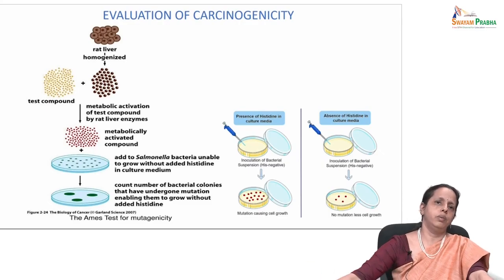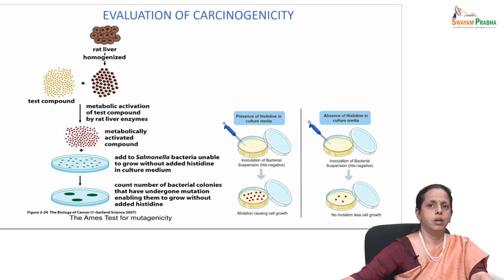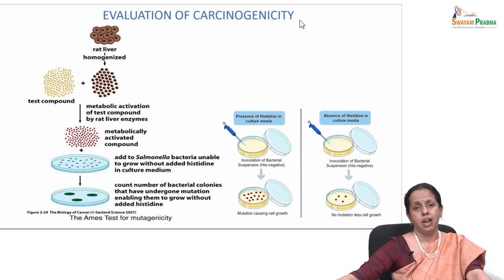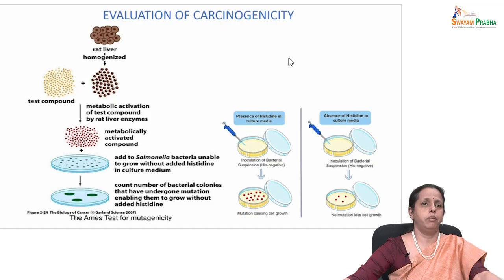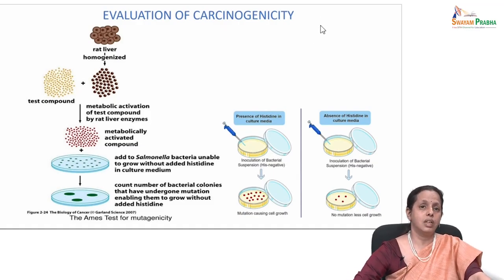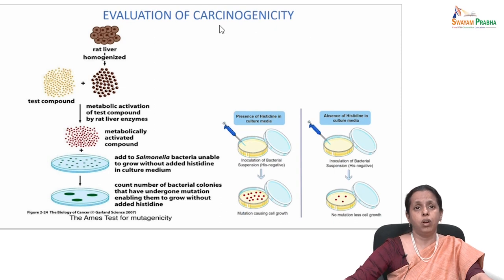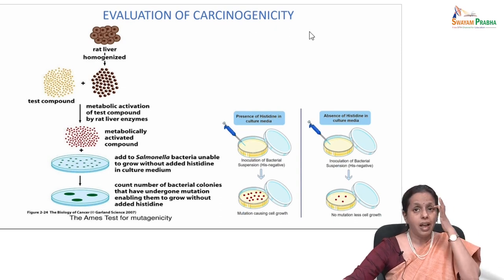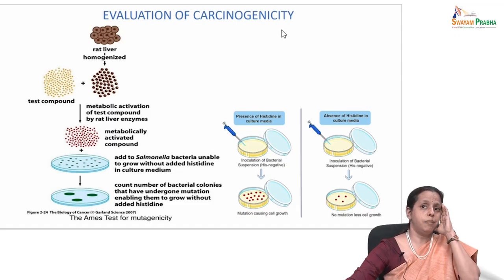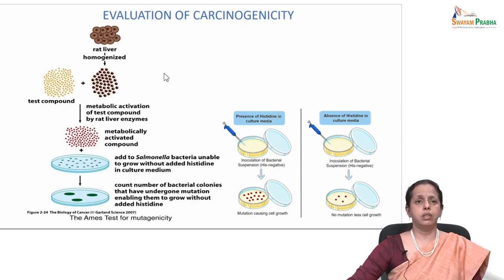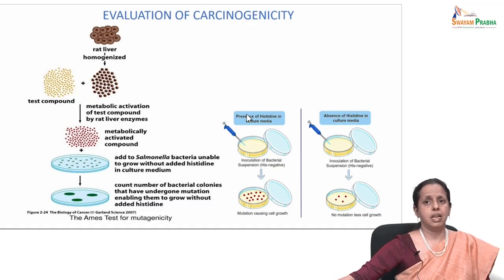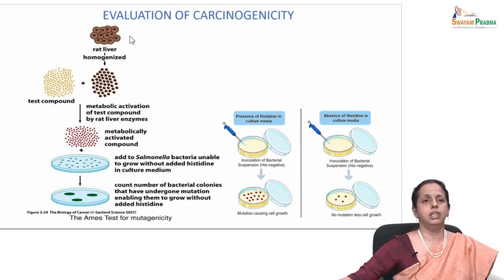One very important assay we will talk about now is the Ames assay, first used for evaluation of carcinogenicity. For example, when you come up with new chemical compounds — say an antibacterial or antibiotic — you have to evaluate whether it causes harm to normal cells or has the potential to cause cancer; the carcinogenicity capacity has to be assessed. The Ames test is named after its developer Bruce Ames at the University of California Berkeley. It uses bacteria as a sensitive biological indicator of whether a substance can cause a change in DNA.